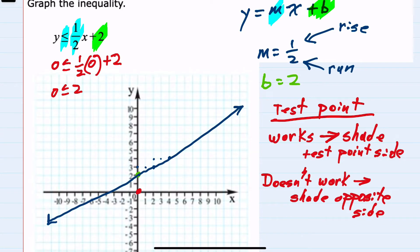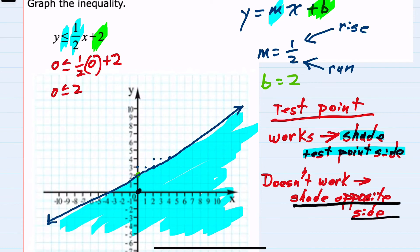When using a test point, if that test point works and you get a true statement, like we did here, 0 is less than or equal to 2, then I want to shade on the test point side of the line. So here I would be shading on the test point side of the line. Likewise, if the test point would not have worked and we would have gotten a false statement, like 3 is less than 2, then I would want to shade on the opposite side, away from the test point.